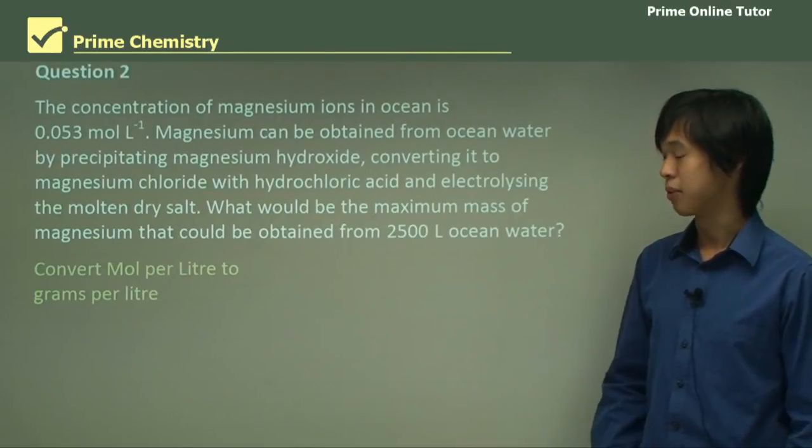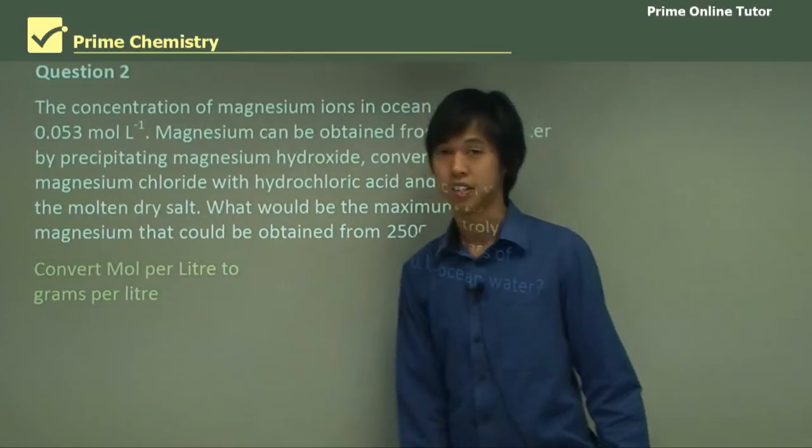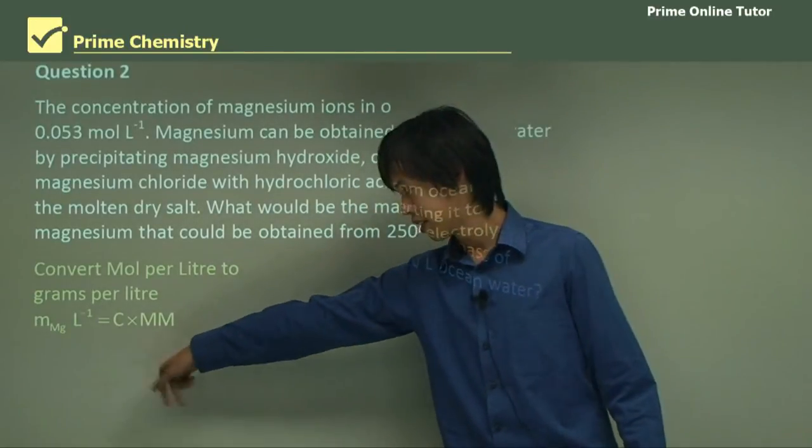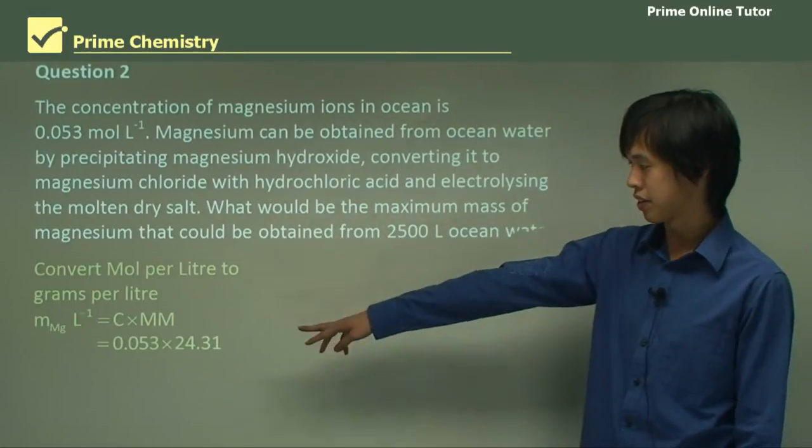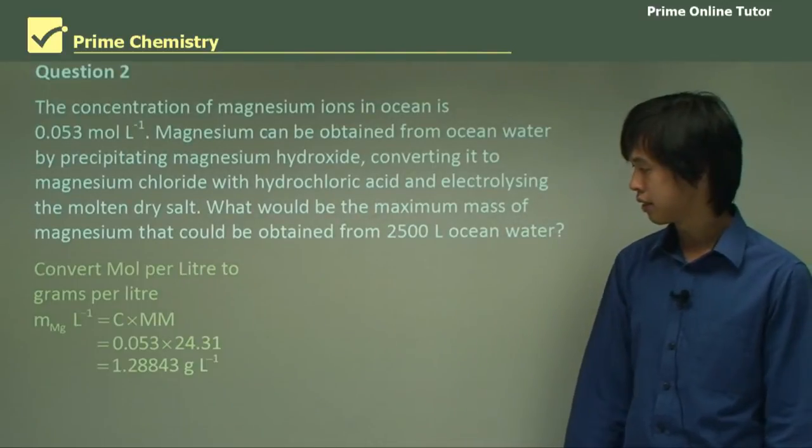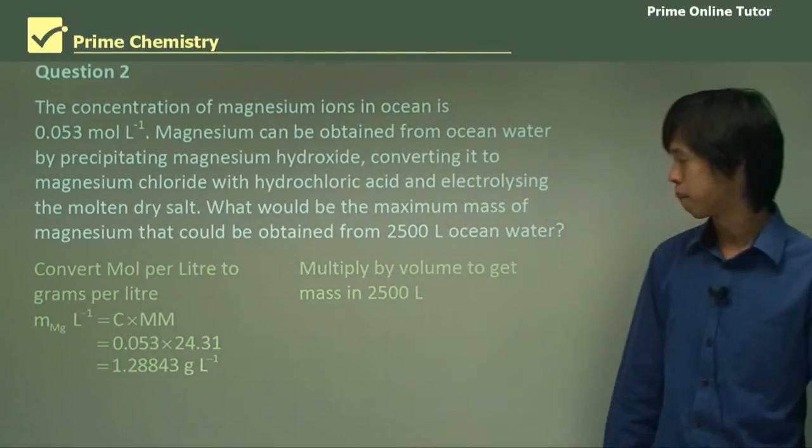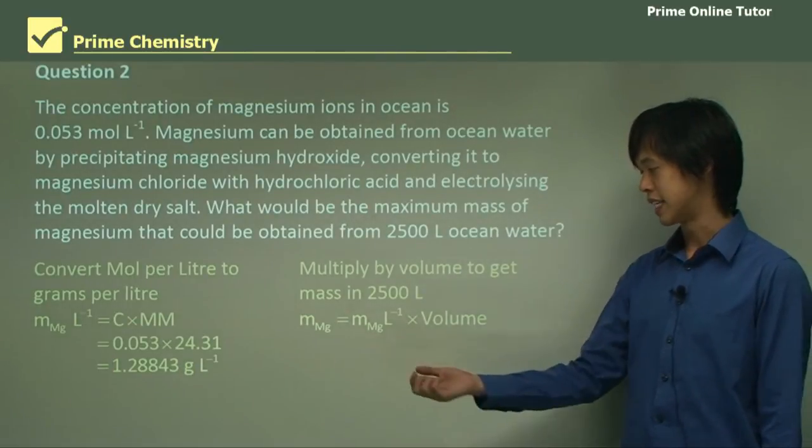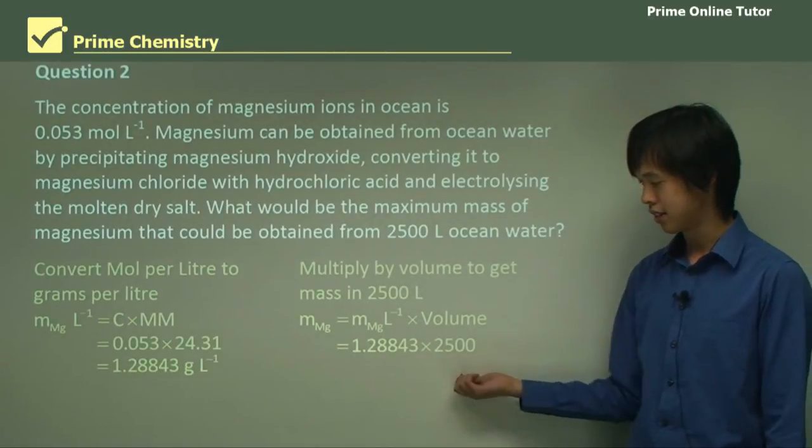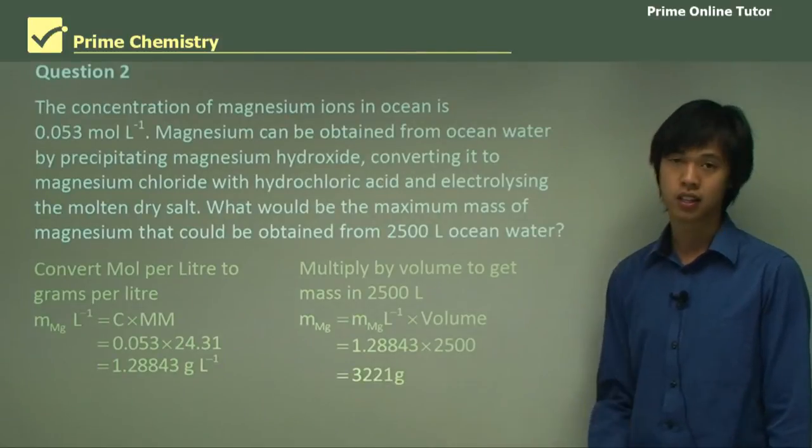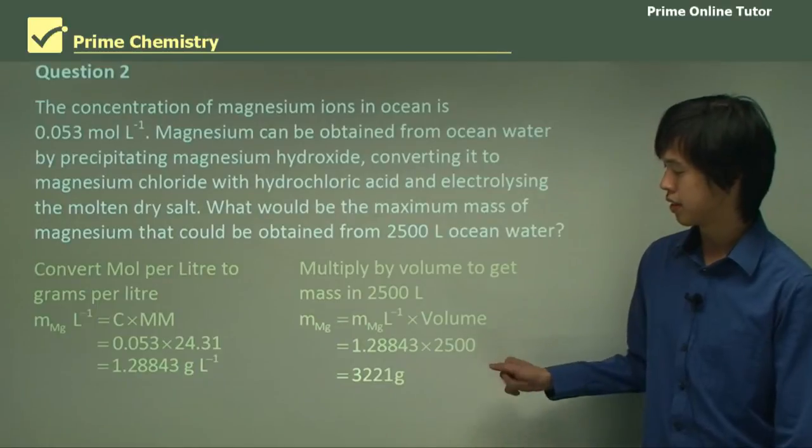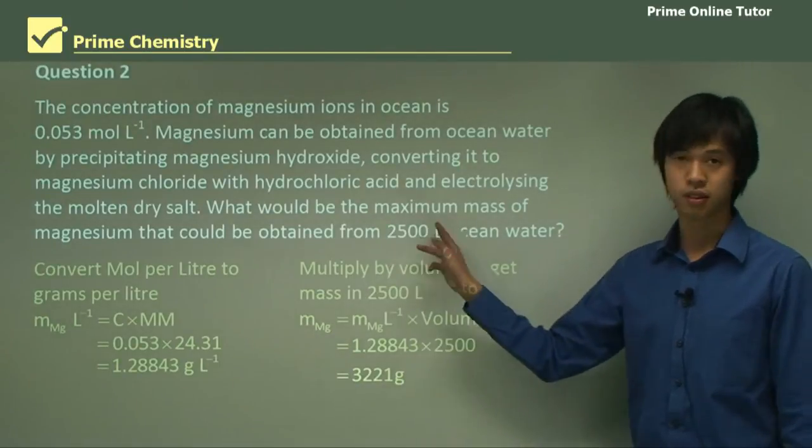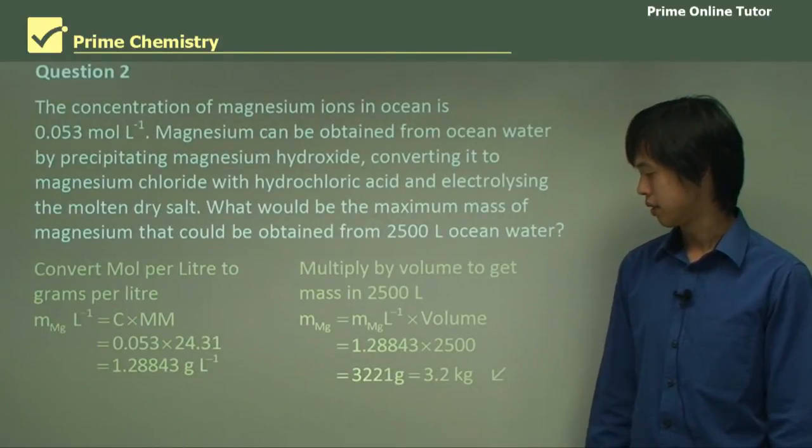So how do we work it out then? First we convert the moles per liter to grams per liter. Here we have moles per liter. We need to convert to grams. The mass of magnesium per liter is equal to the concentration times the molar mass of magnesium. So we have the concentration times the molar mass, and we can work that out from our periodic table. And then we get 1.28 grams per liter. Then, all we have to do is multiply by the volume of water that we have, and that gives us the mass. Mass of magnesium per liter times the volume gives you this, which is 3,221 grams. So, you really didn't need any of this extra reaction stuff. It was just there to kind of throw you off when the solution was quite simple, because the word was maximum. Or you could say it's about 3.2 kilos also.